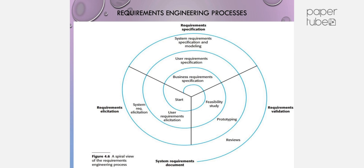A common view of the Requirements Engineering Process is a spiral-like structure, as shown in the figure. The three core activities are: Requirement Elicitation, Requirement Specification, and Requirements Validation.